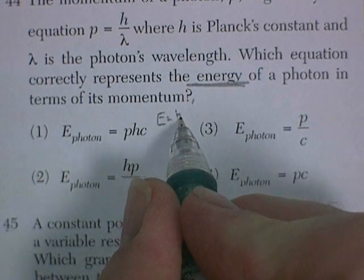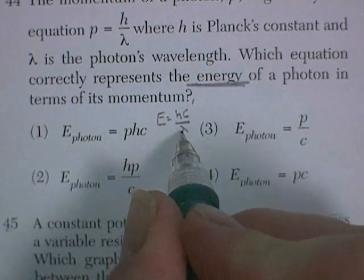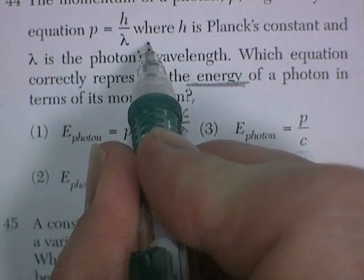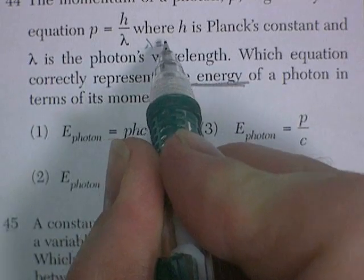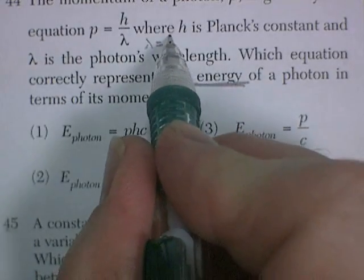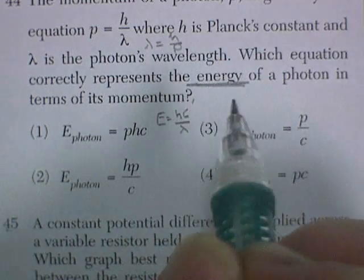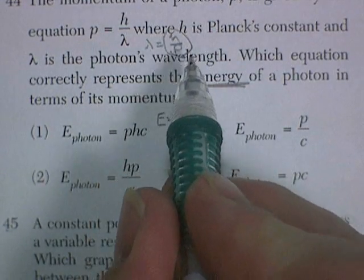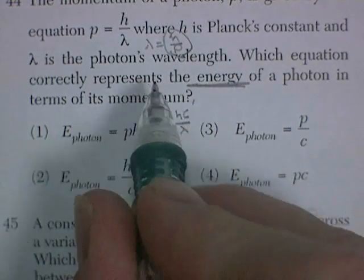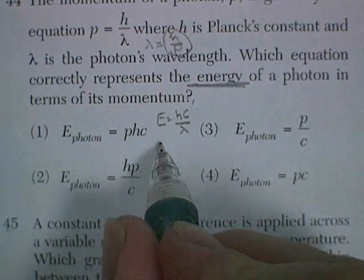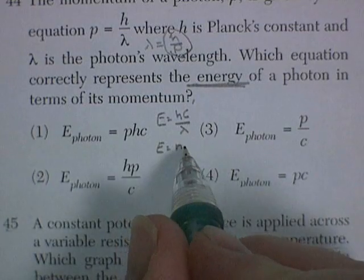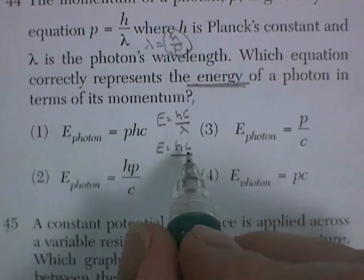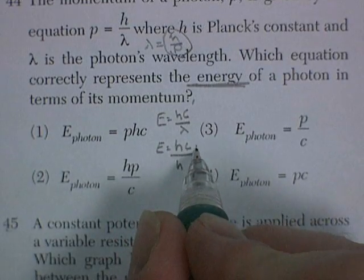Energy is equal to H C over lambda. Now, momentum is H over lambda, which means lambda would equal H divided by momentum. So we could substitute Planck's constant divided by momentum for lambda.